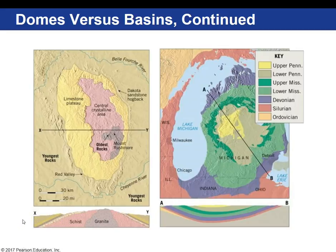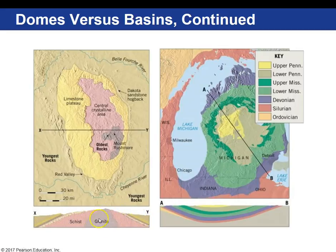Domes can form in a variety of ways. One is due to the emplacement of a magma body. Here is a cross section of the Black Hills of South Dakota. As you cross from X to Y, you would encounter these different rock layers, the oldest being in the center — the schist — and then the granite subsequently intruded into that. You can see the dipping rock layers away from the center of the dome.